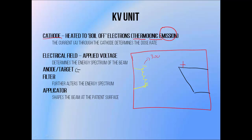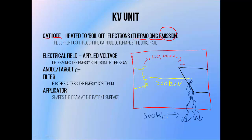If we apply a voltage of 300,000 volts between the two, the electrons will gain an energy of 300 kiloelectron volts, since one electron volt is the energy that an electron gains when it is accelerated using one volt. This means that when the electron beam strikes the target and undergoes the bremsstrahlung interaction, it will produce a photon beam with a maximum energy of 300 keV. So we say that the beam has a KVP, or peak kilovoltage, of 300.